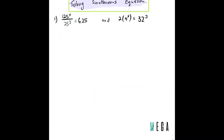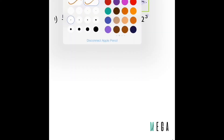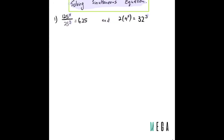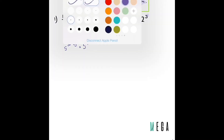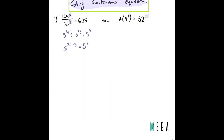The last part involves solving a simultaneous equation. We have two variables, x and y, and two different equations. First, reduce in terms of base 5: 125 is 5³ and 25 is 5², so the equation becomes 5^(3x) divided by 5^(2y) = 5^4, which gives 5^(3x−2y) = 5^4. Cancelling the base: 3x − 2y = 4. This is equation one.